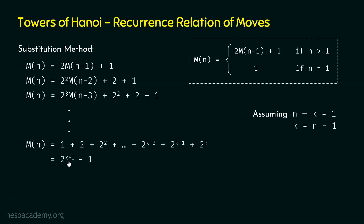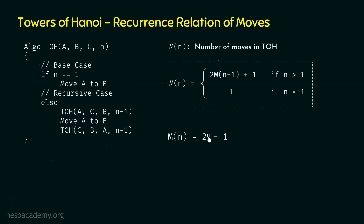Replacing k by n−1, we get 2^((n−1)+1) − 1 = 2^n − 1. So m(n) = 2^n − 1. These are the number of moves: if there are n disks, then we will have 2^n − 1 moves. We can observe the moves are exponential — if there are n disks, then we have 2^n here. So for a small number of disks, we still get an exponential number of moves.